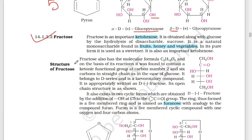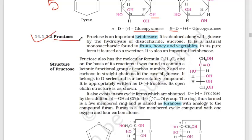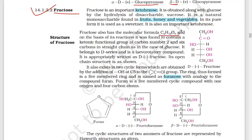Now let's move on to fructose. Glucose is an aldohexose with six carbons, whereas fructose is a ketohexose — it has a ketone group and also has six carbons. Fructose is found in fruits, honey, and vegetables. Fructose has the molecular formula C6H12O6, the same as glucose.